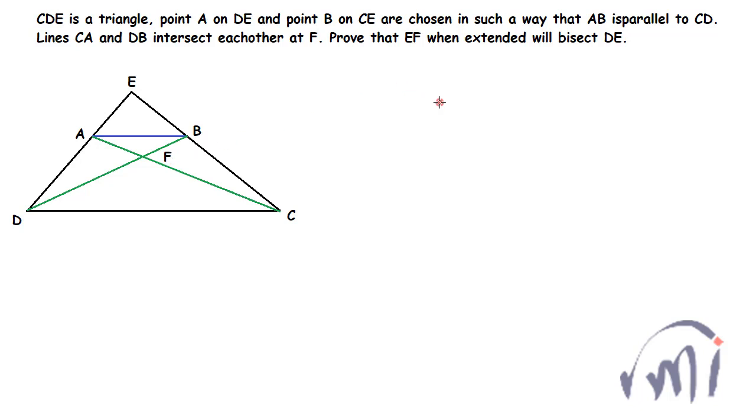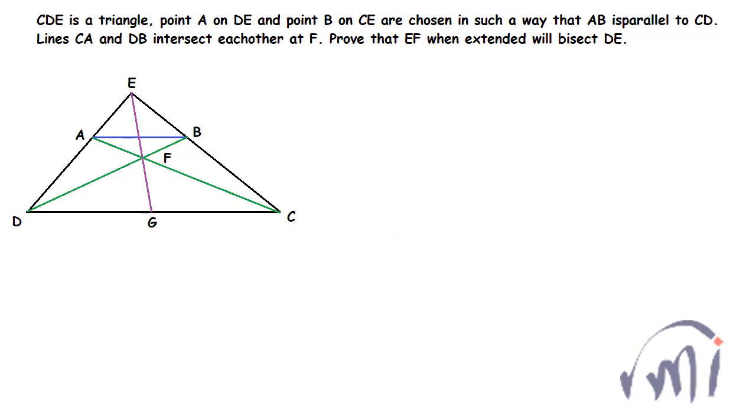And we have to prove that if I draw a line joining point E and F and extend it till DC, then it will bisect DC. That means if I call this point as point G, then DG will be equal to GC. This we have to prove.